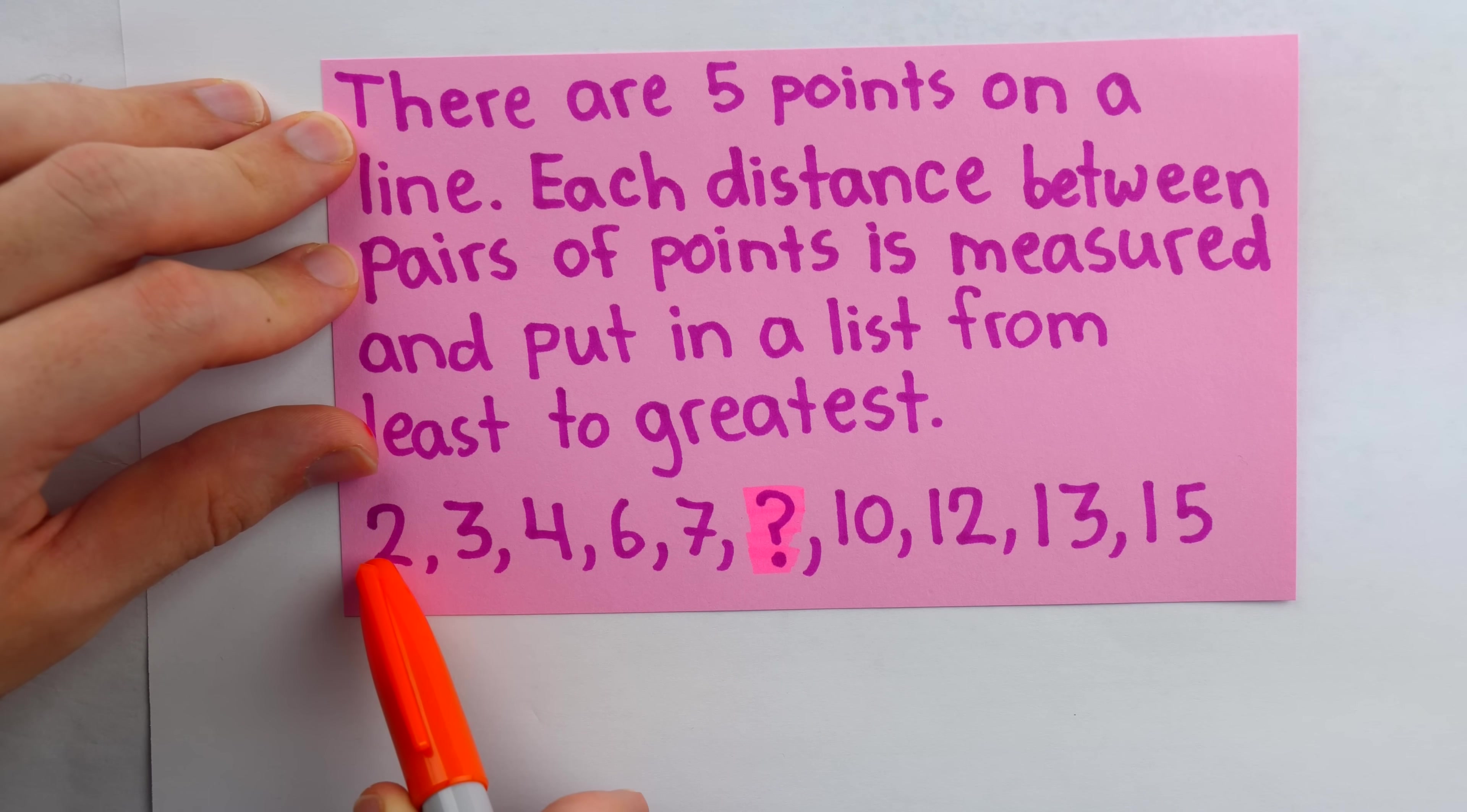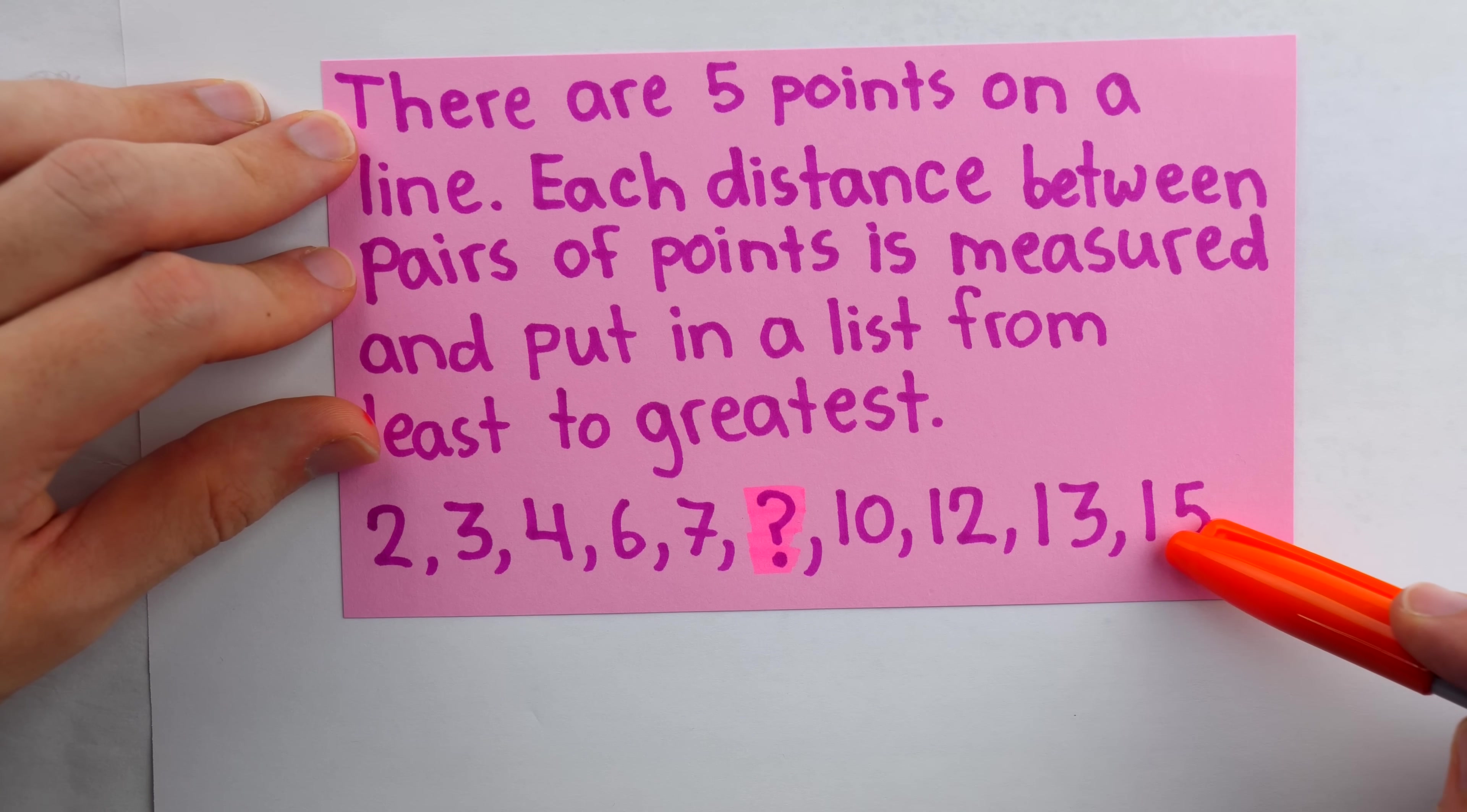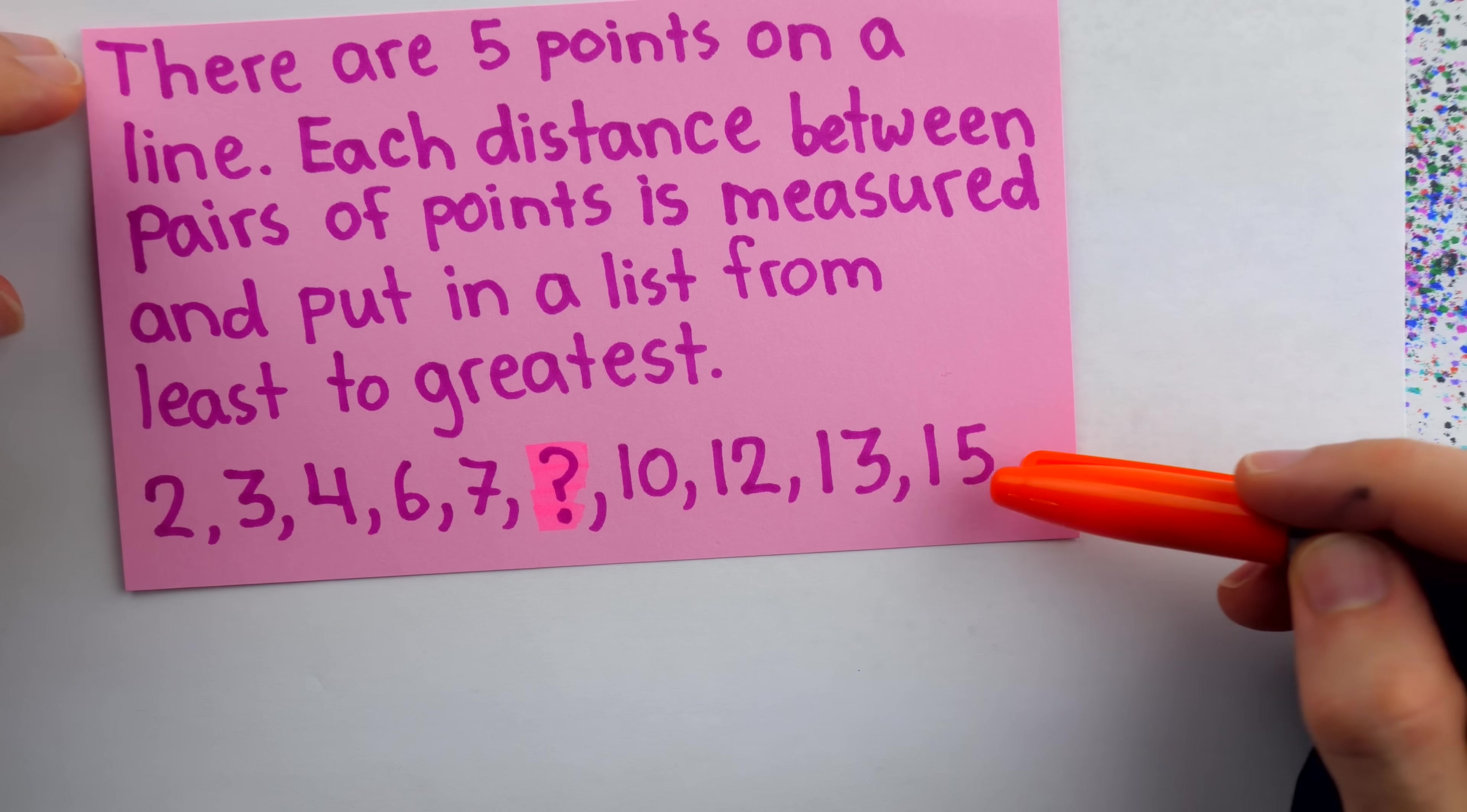every single distance is unique, with the potential exception of this missing one. So the distance between every pair of points is on this list. None have been excluded because they're duplicates. The list was put in order from least to greatest. So we know this last number is the greatest distance between any two points.